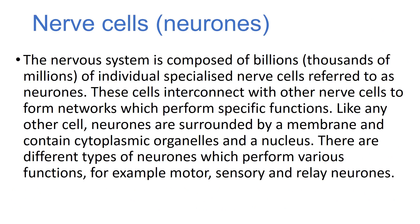Neurons are cells like any other cells but they are specialized — differentiated to give them a specific form able to provide a particular function. Like any other cells, neurons are surrounded by a membrane, contain cytoplasm and organelles, and have a nucleus containing genetic material. There are different types of neurons that perform different functions: motor neurons, sensory neurons, and relay neurons are often the ones we learn about first.